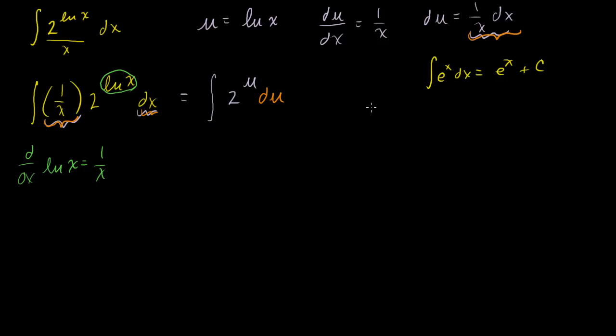We know that the integral of e to the x dx is equal to e to the x plus c. So if I could somehow turn this into some variation of e to the x, or e to the u, maybe I can make this integral a little bit more tractable. So let's see, how can we redefine this right here? Well, 2 is the same thing as e to the natural log of 2, right? The natural log of 2 is the power you have to raise e to to get 2.